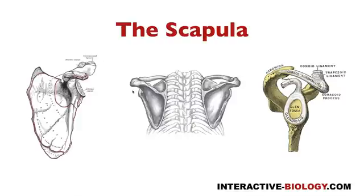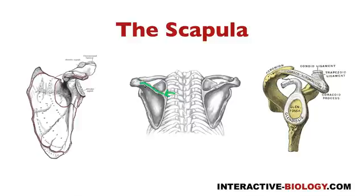Now let's get into some more fun details. We're going to start by looking at the dorsal aspect of the scapula — looking from the back. The first structure I want to point out is a very obvious one: the spine of the scapula. Right here we have the base of the spine, and as the spine projects laterally, it ends in a projection called the acromion process. That's the high point of the scapula — the name comes from the Greek word 'acropolis,' meaning a city high on an elevation.